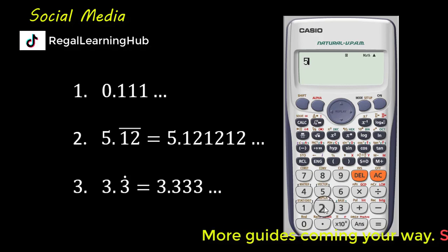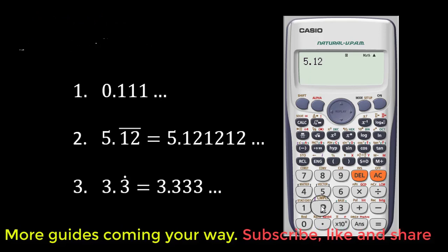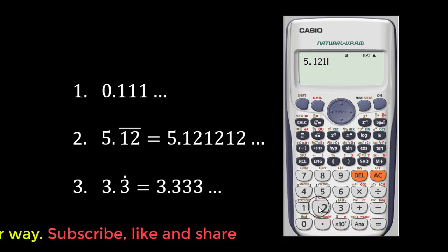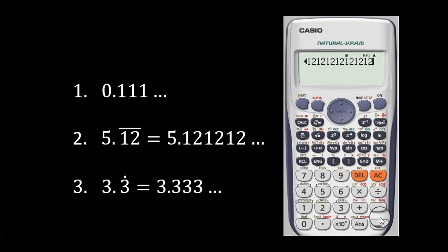So now we press 5.12. You will repeat it until you get to above 12 decimal places. So we have here 1, 2, that is 4, 1, 2, 6, 1, 2, 8 decimal places, 1, 2, 10 decimal places, 1, 2, 12 decimal places, 1, 2, 14 decimal places. Let's stop there and press the equal to sign. Now you have the answer 169 over 33.